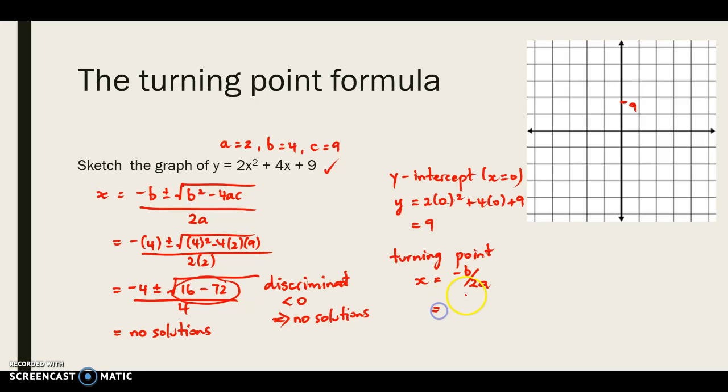So we substitute for values of b and a as seen already. And you can see that our x value is negative 1. We then substitute that into the original equation, and that helps us find the corresponding y point. So our turning point is going to be (-1, 7).